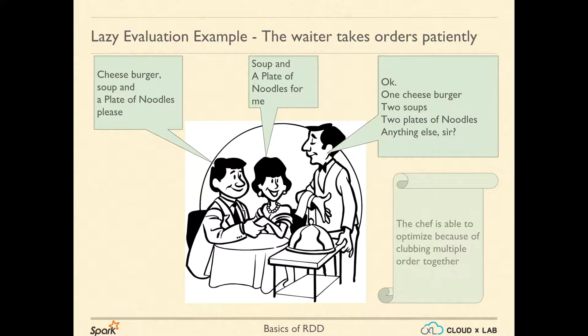After clubbing, the order would look like this: one cheeseburger, two soups, two plates of noodles. This is lazy evaluation.